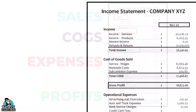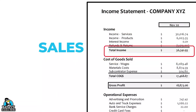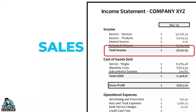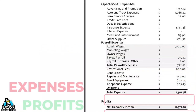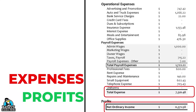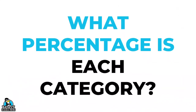Looking closer at our example P&L, we see that our sales came in at $36,341 — the total of our pie. The cost of goods came to $17,468, our operational costs came to $7,501, and our profit came to $11,371. The numbers look really good, but what percentage went out for each of these categories?